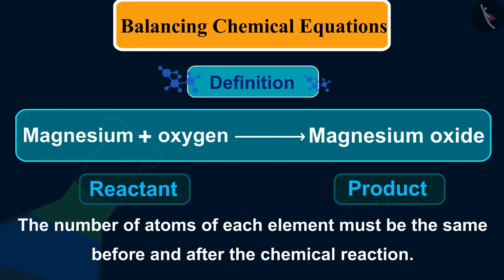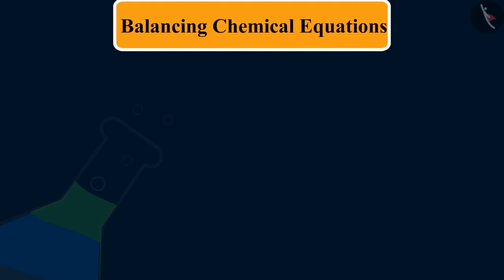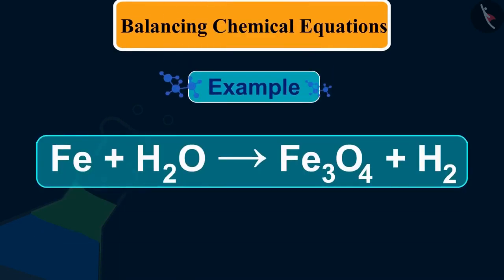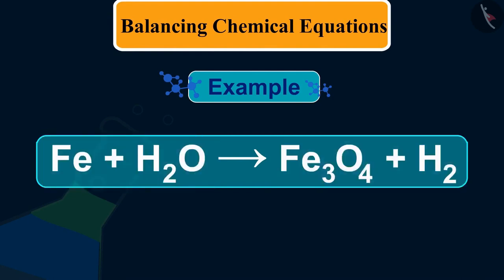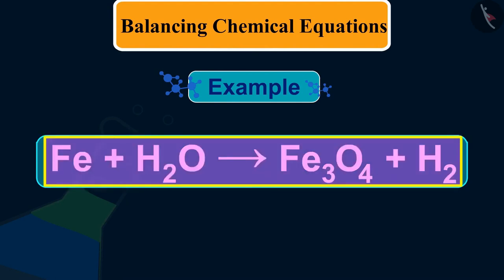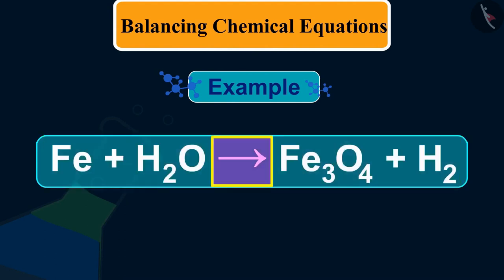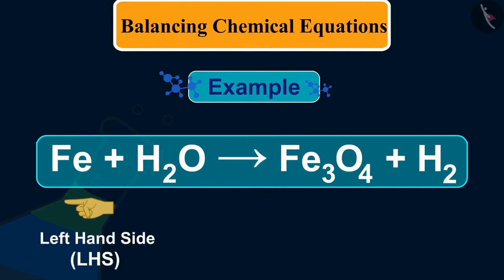It would not be wrong to say that mass is neither created nor destroyed in any chemical reaction. Let us now try to understand balancing with the help of an example. Take the reaction of iron with water which produces iron oxide and hydrogen. Let us examine the number of atoms of different elements on both sides of the arrow.